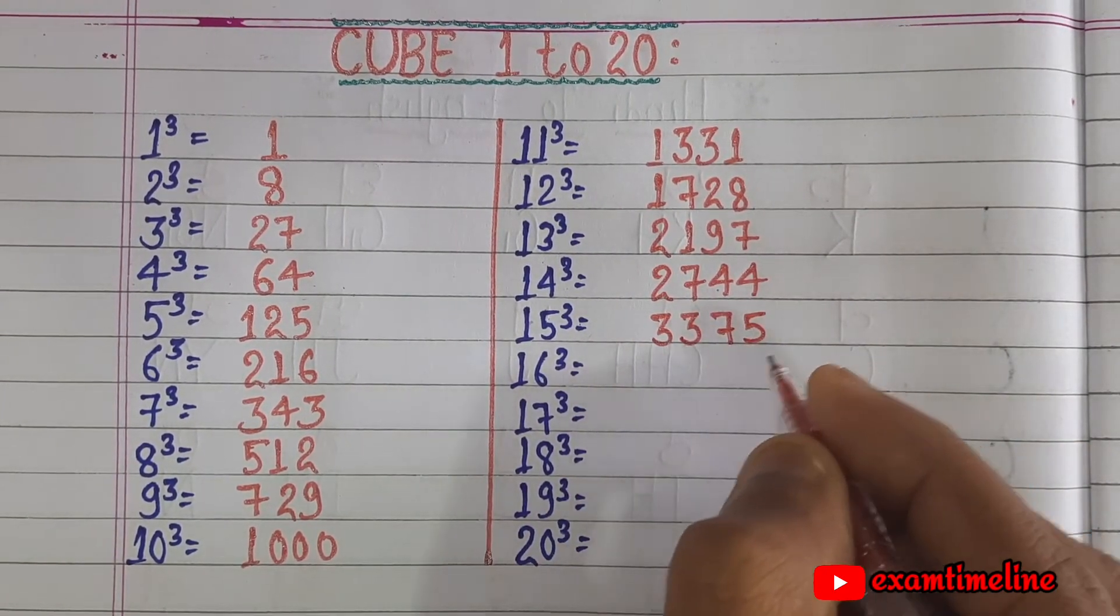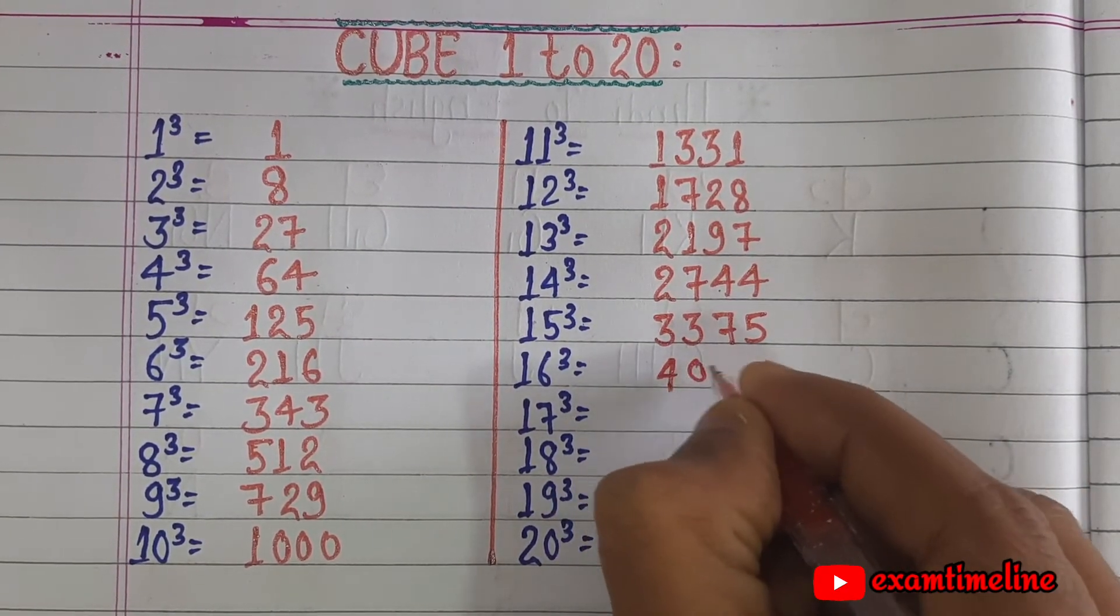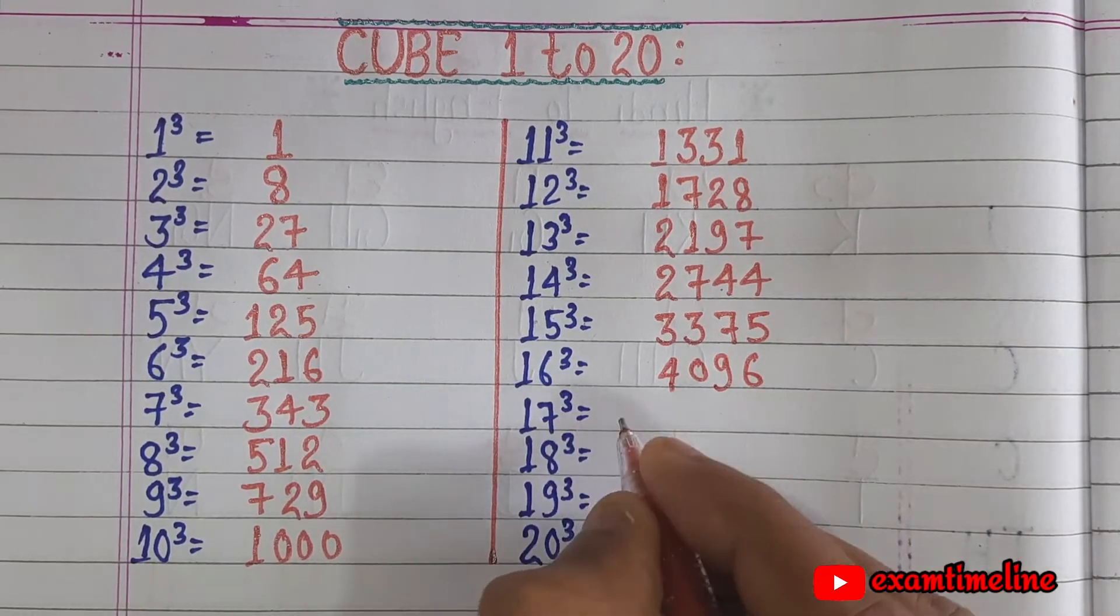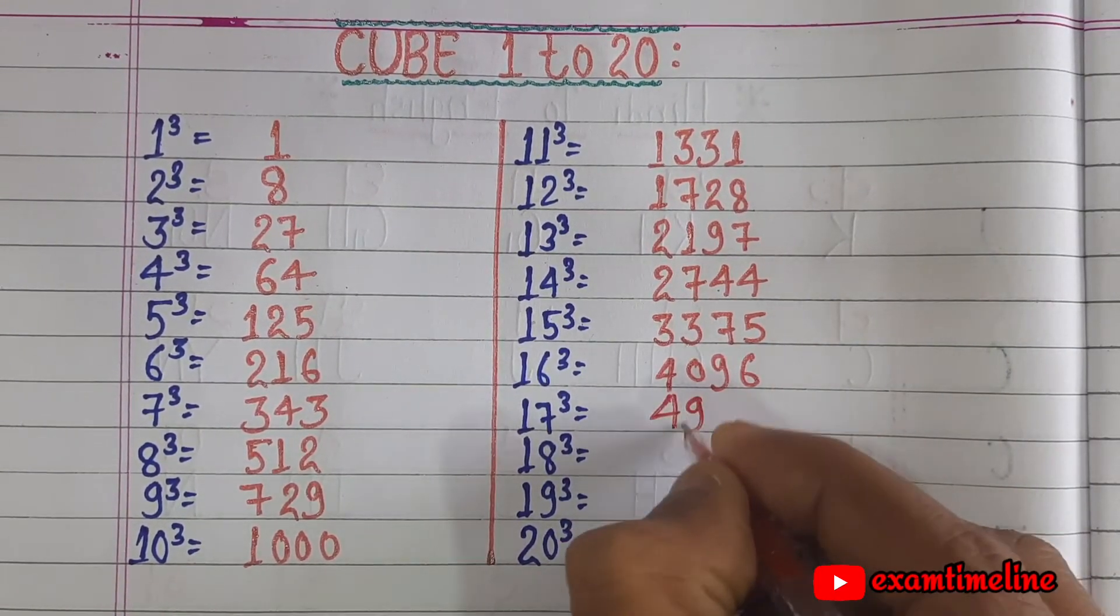16 cube equals 4096, 17 cube equals 4913.